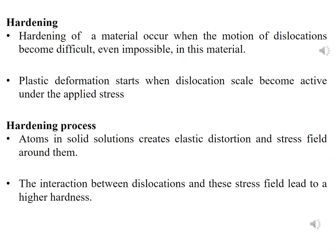Hardness of a material occurs when the motion of dislocations becomes difficult or even impossible. If dislocation motion is difficult, that material will be hard and exhibit hardening properties. Plastic deformation starts when dislocation scales become very active under applied stress.